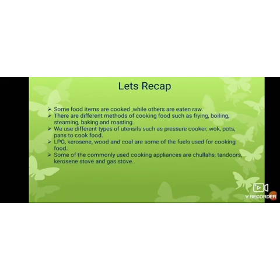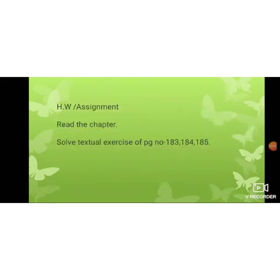Now there is a small activity for you all. You are going to visit your home kitchen and, with the help of your mummy, you are going to observe the different types of utensils available in your kitchen. Then you are going to differentiate them and tell the different uses of those appliances. So with this we have completed the chapter Our Food. Read the lesson thoroughly, as reading is very important. Solve the textual exercises on pages 183, 184, and 185. Stay fit at home, eat healthy, and take care of yourself.